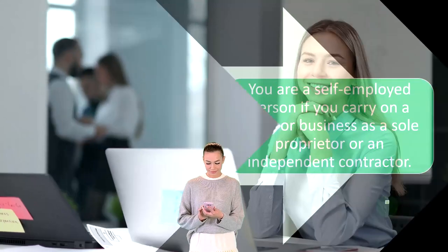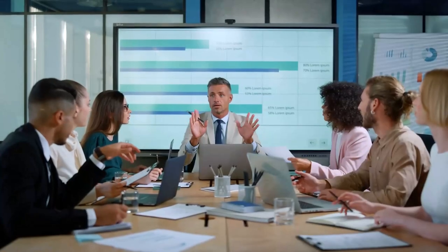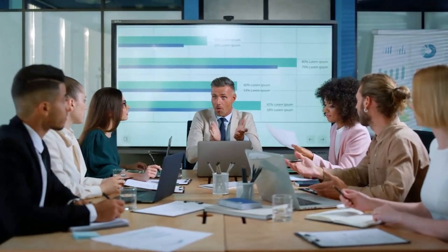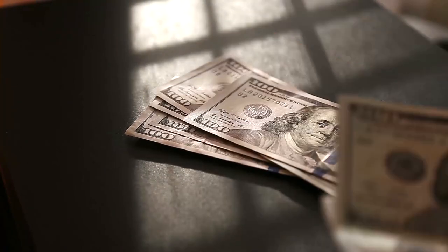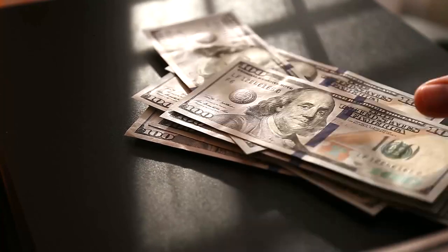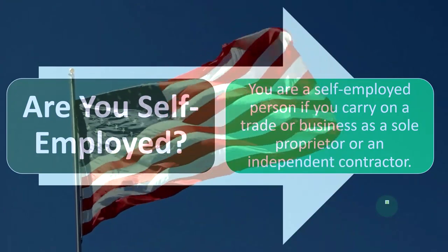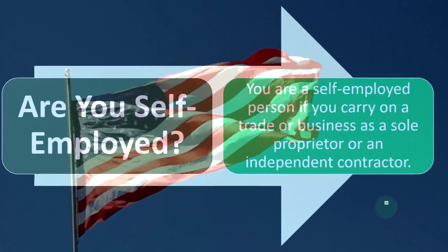In an employee-employer situation, the employer pays W-2 income, and the IRS has leverage over the employer: if the employer wants a deduction for wages paid, the IRS requires them to issue a W-2 not only to the employee but also to the government. The IRS also forces the employer to be the tax collector, withholding money from the paycheck before the employee even receives it.